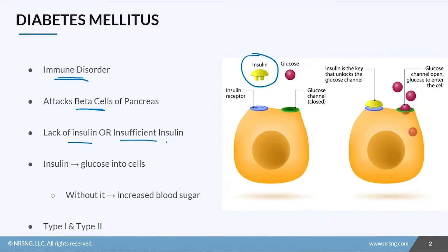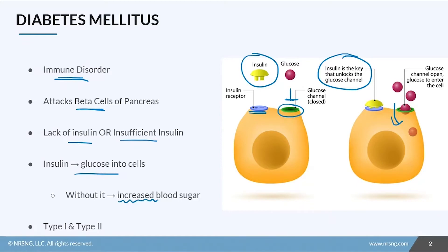Let's remind ourselves of what insulin does. Insulin is the key that unlocks the cell so that glucose can actually get inside. If the cell is not unlocked by insulin, then the glucose channel is closed — it can't get in and it stops on the outside. So without that key to get glucose into the cells, the amount of glucose hanging out outside the cell is going to go up, hence our increased blood sugar levels.